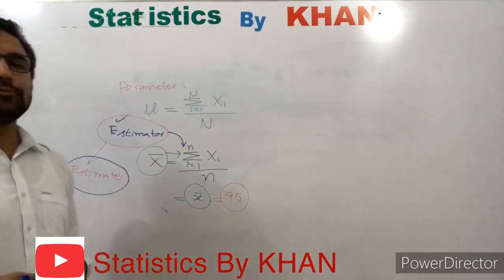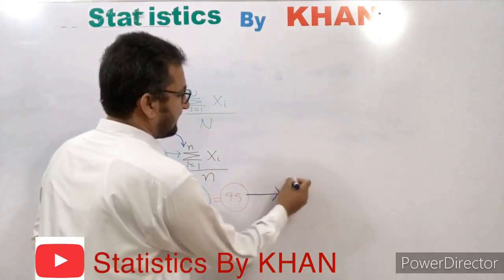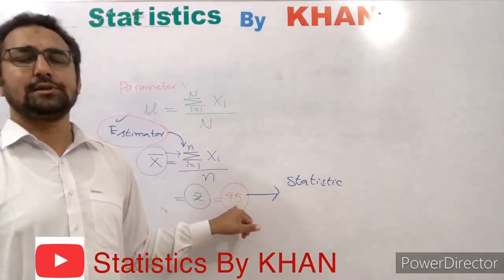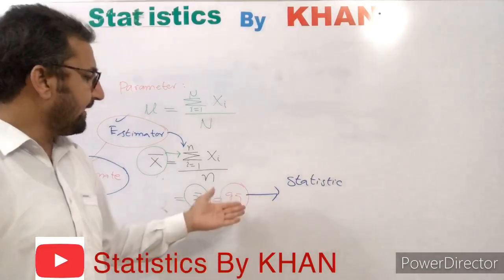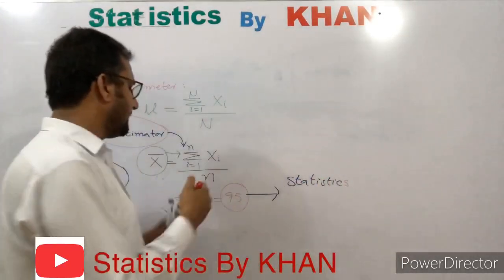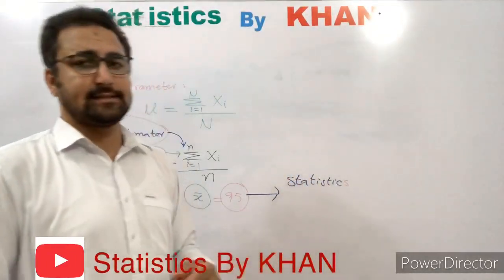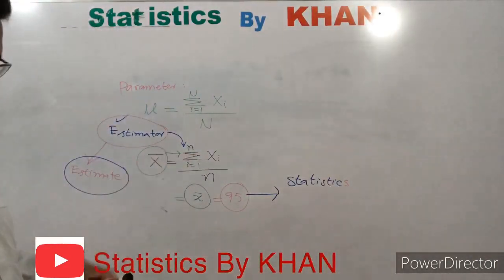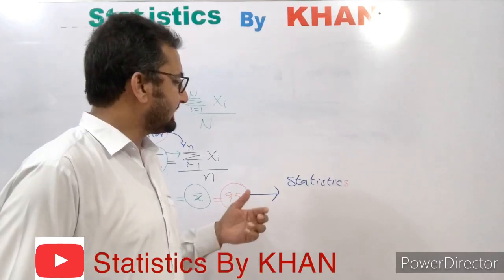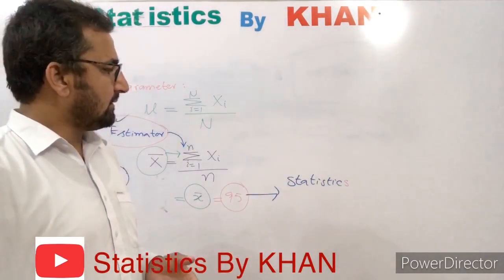We usually define a statistic as a numerical value calculated from sample data. Note it is statistic without an 's' because it refers to a single value. Any value calculated from the sample is called a statistic. If there are more than one value — for example, multiple sample means x1-bar, x2-bar, x3-bar — then you attach 's' and it becomes statistics, which is the plural form.